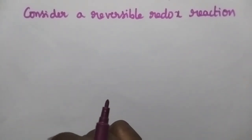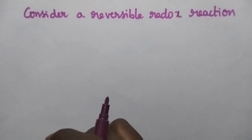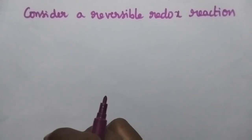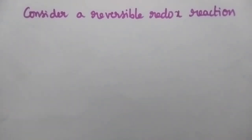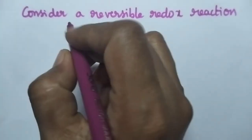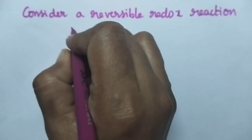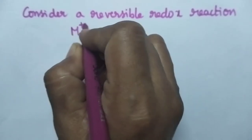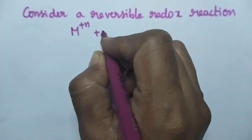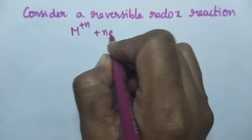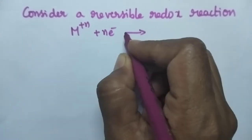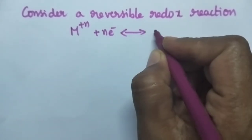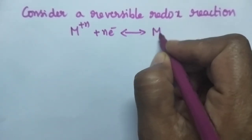Let us derive the Nernst equation in a simple manner. For that purpose, let us consider a reversible redox reaction: M^(n+) gains N number of electrons and results in the formation of the metal.